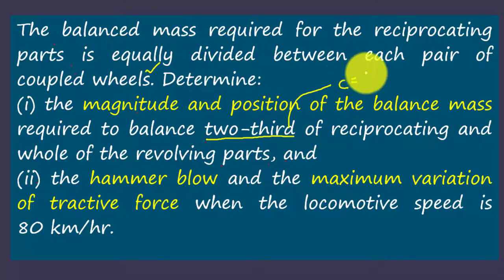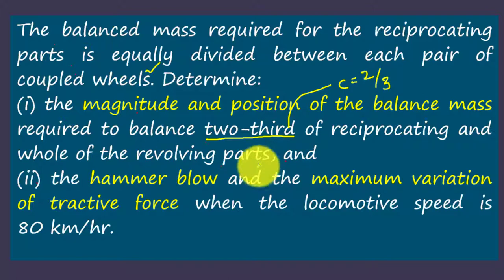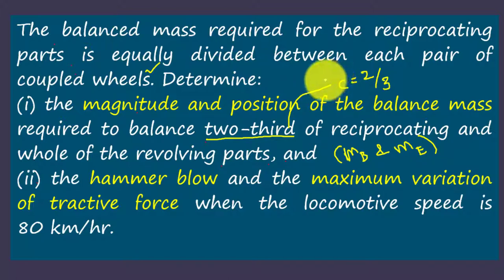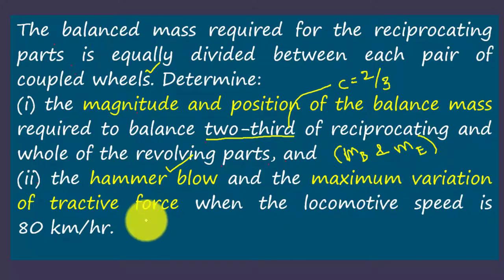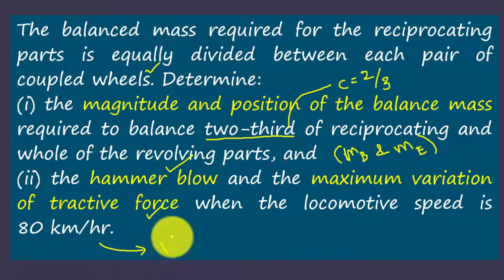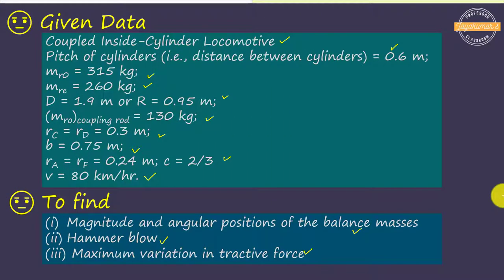The angle between the engine cranks is 90 degrees. The angle between the coupling rod crank and the adjacent engine crank is 180 degrees. The balancing mass required for the reciprocating parts is equally divided between each pair of coupled wheels. We need to determine the magnitude and position of the balance mass required to balance two-thirds of the reciprocating mass (c = 2/3) and the whole of the revolving mass. We also need to determine the hammer blow and maximum variation of tractive force when locomotive speed is 80 km/h.